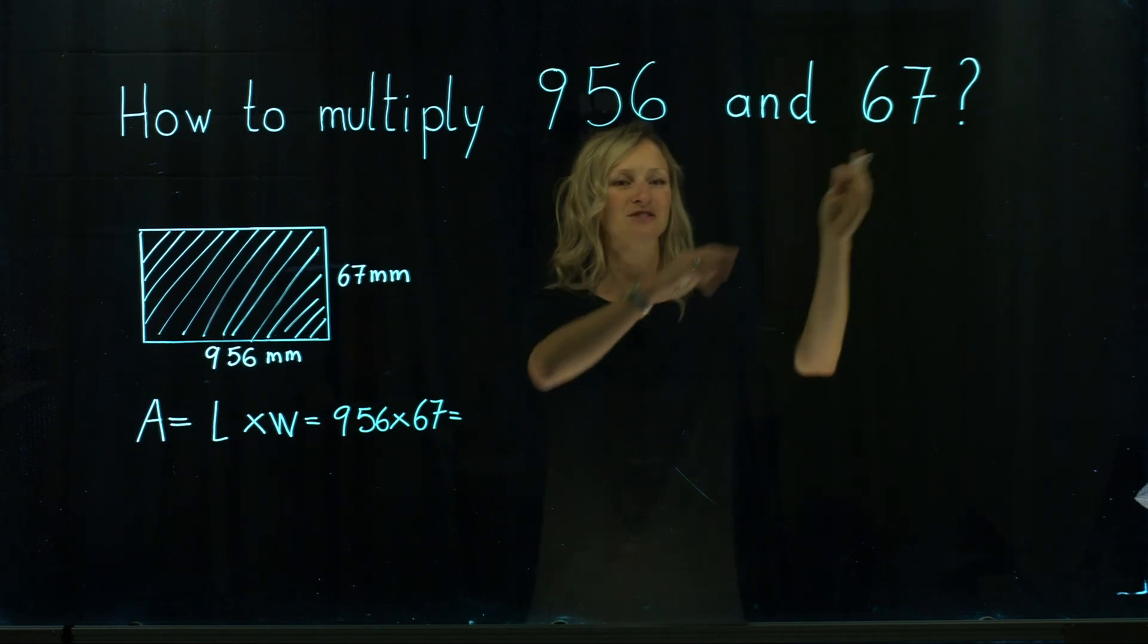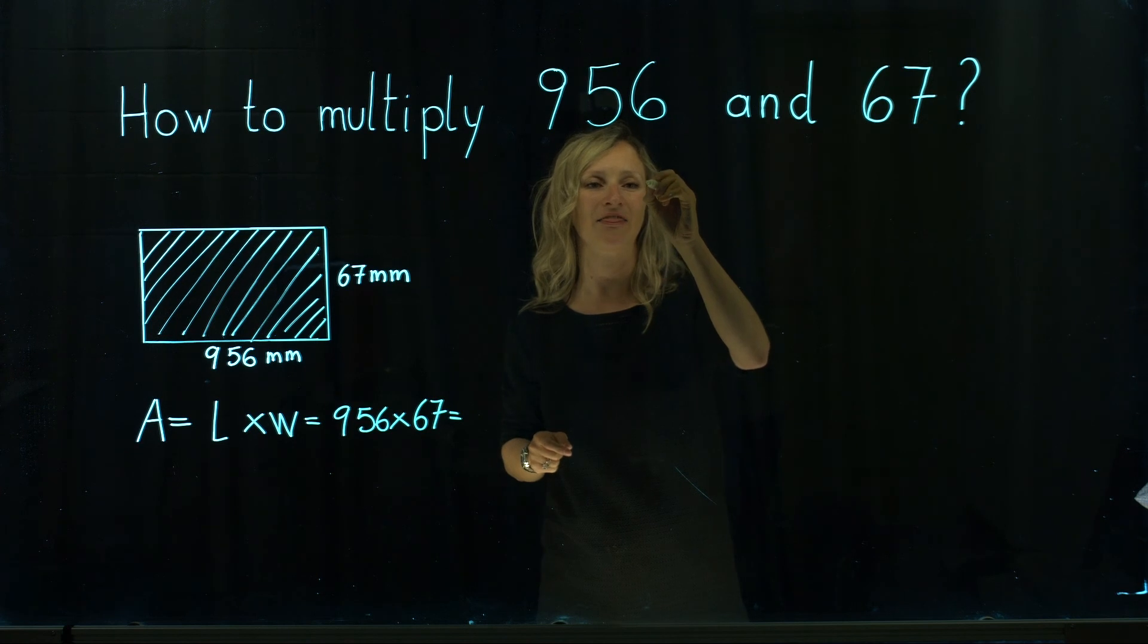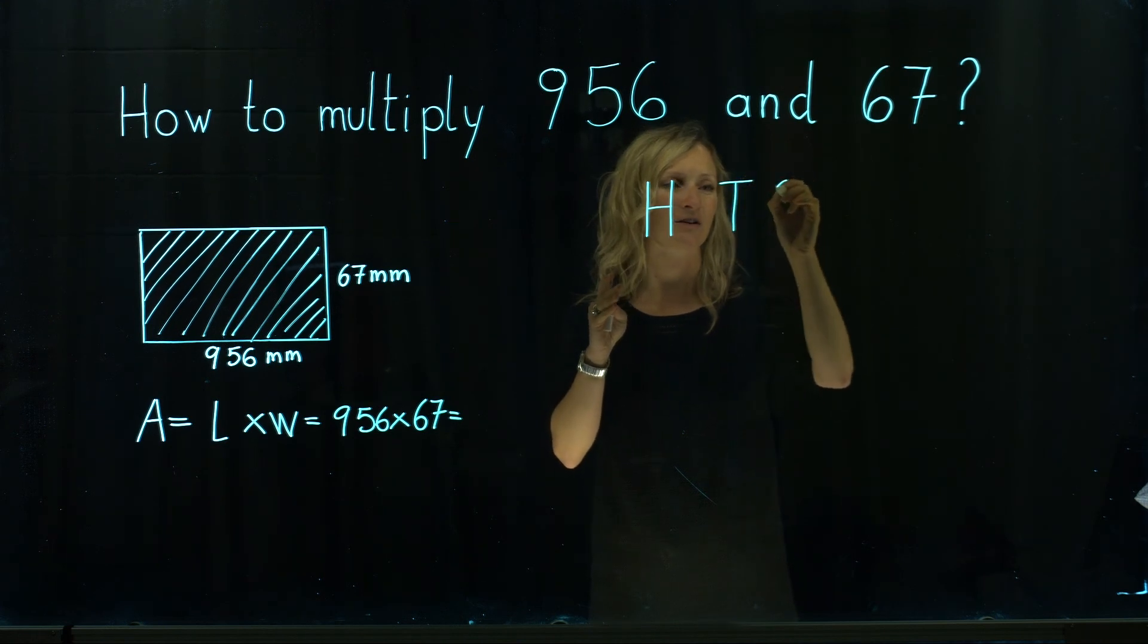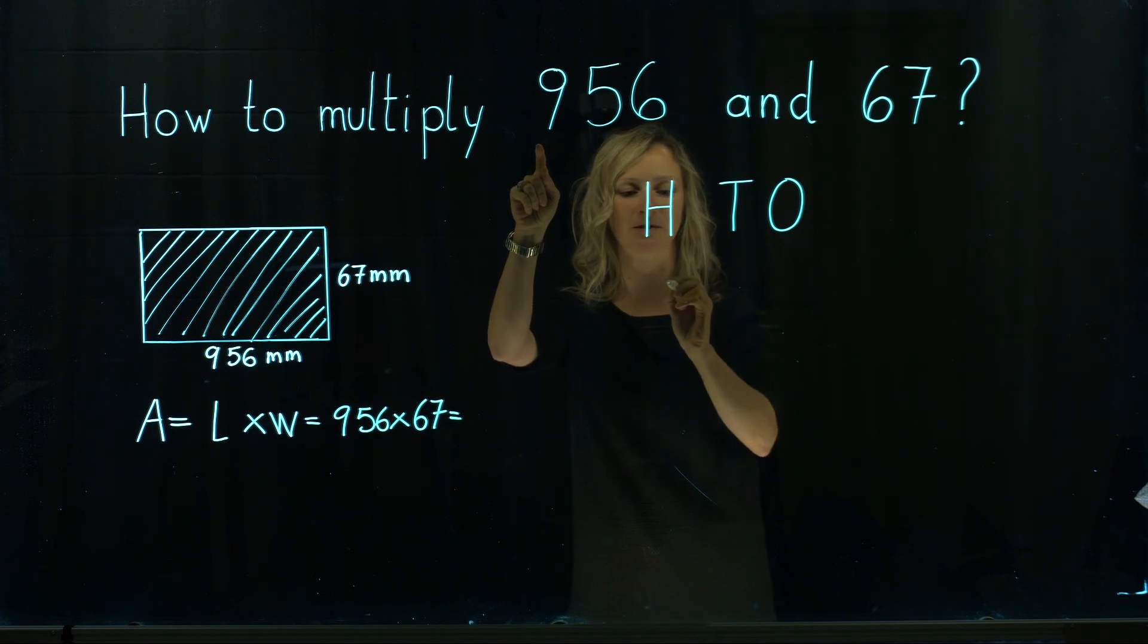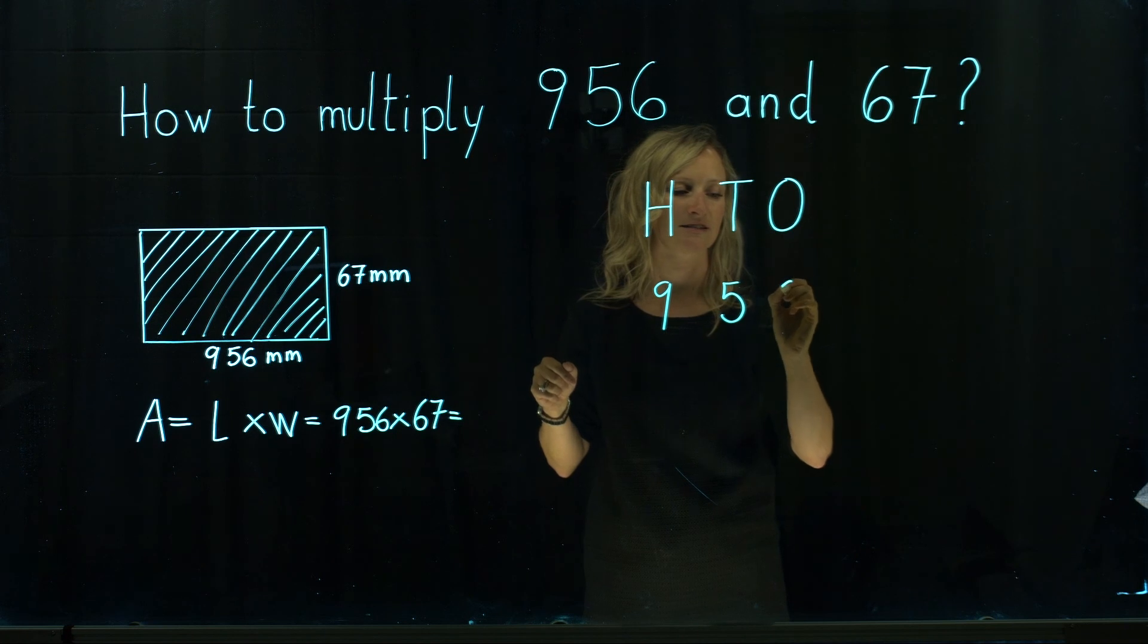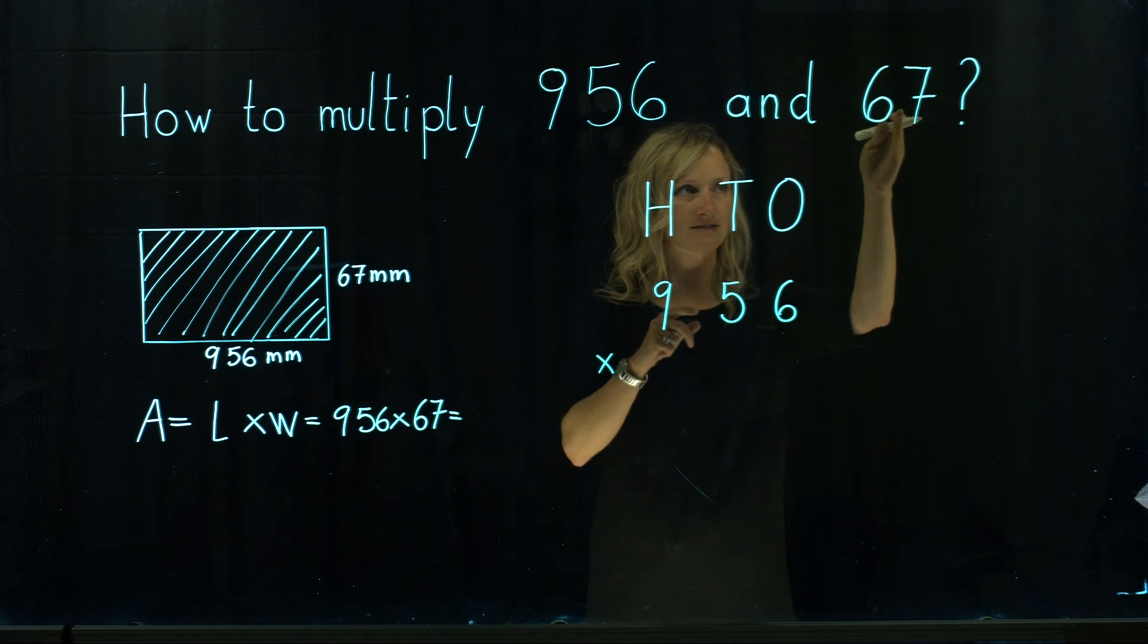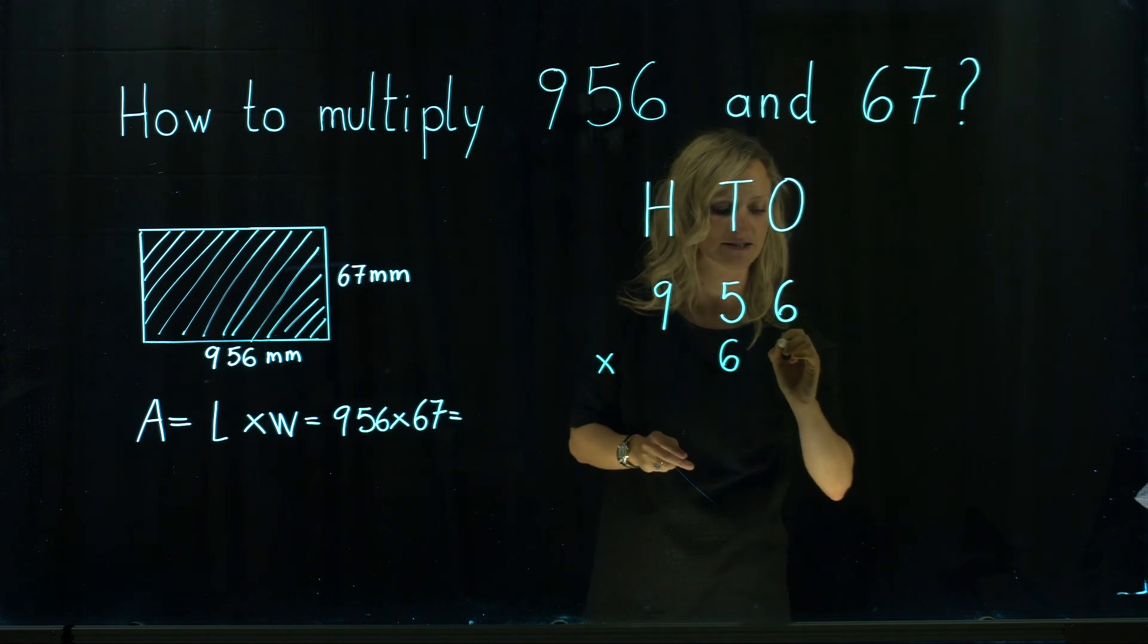We actually place those two values in a place value table. So hundreds, tens and ones. And we will firstly place the larger number. So 956 times 67. So 6 goes under the place value of tens and 7 goes under the place value of ones.